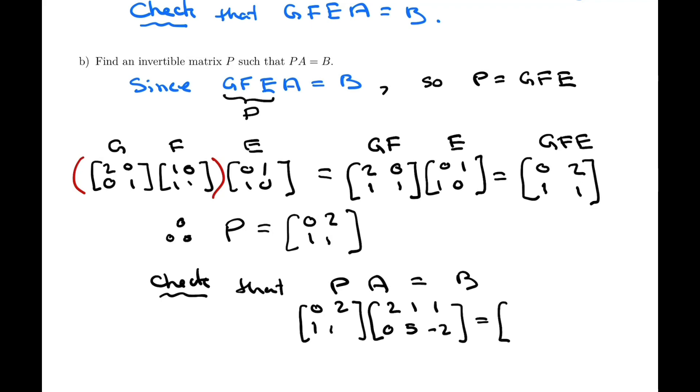And if we carry out that multiplication, we get 0, 10, minus 4, 2, 6, minus 1, which is in fact the matrix B. And that's exactly what we wanted to show. And that is the end of.